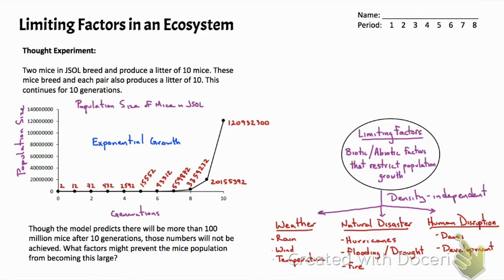Let's now look at density-dependent factors. These are things that are typically biotic. If you look at these—predation, competition, and disease—these are three community interactions we looked at in a previous lecture.